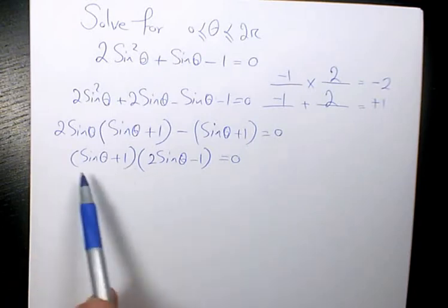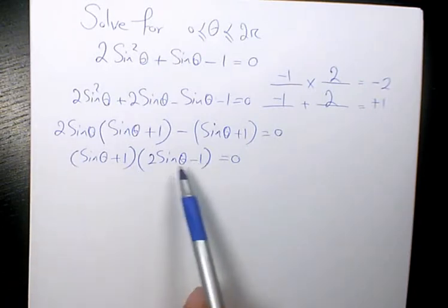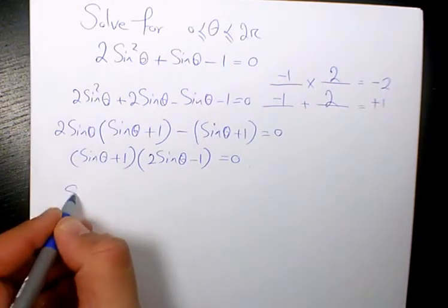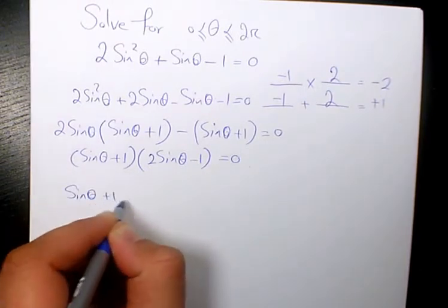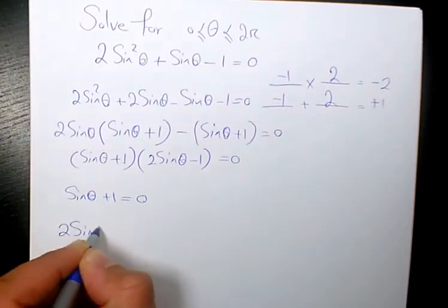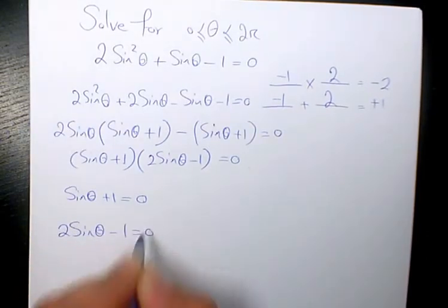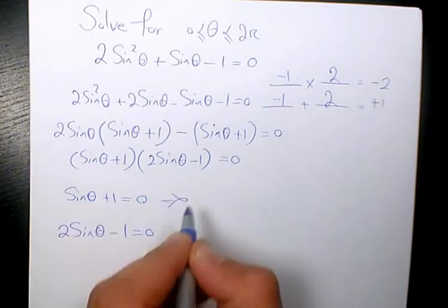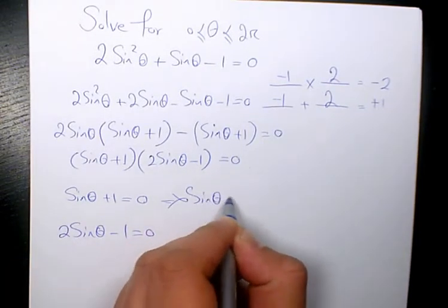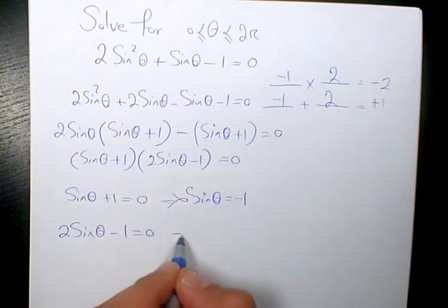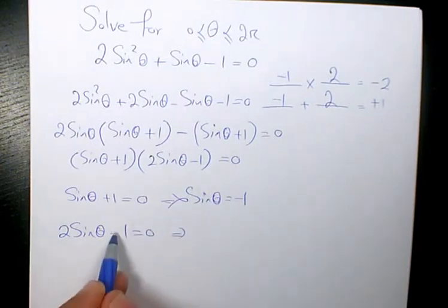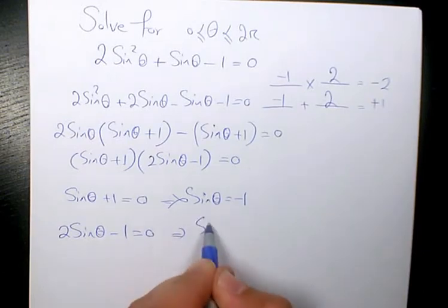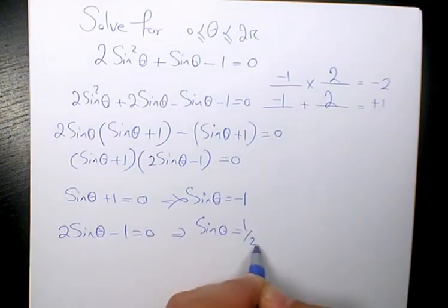So we have 2 expressions. When you multiply them, it means that each of them can be 0. So sine theta plus 1 equals to 0 or 2 sine theta minus 1 equals to 0. So here that will be sine theta equals to negative 1. And here, negative 1 becomes positive 1 divided by 2. It's going to be 1 half. Sine theta is positive 1 half.